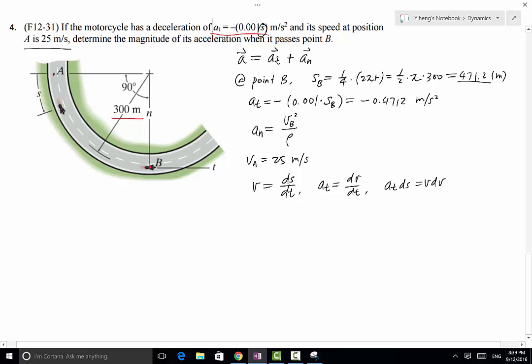In this case, we have a_t as a function of s, and we need to find v. Therefore, we're going to use the third equation. Therefore, a_t is -0.001s ds equals v dv. Integrate on both sides.